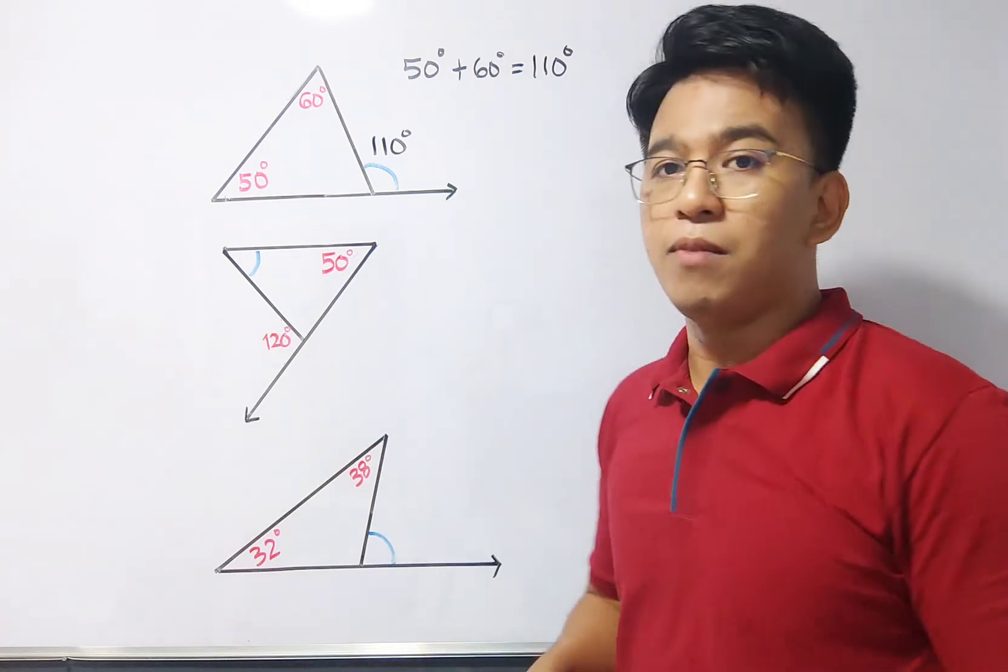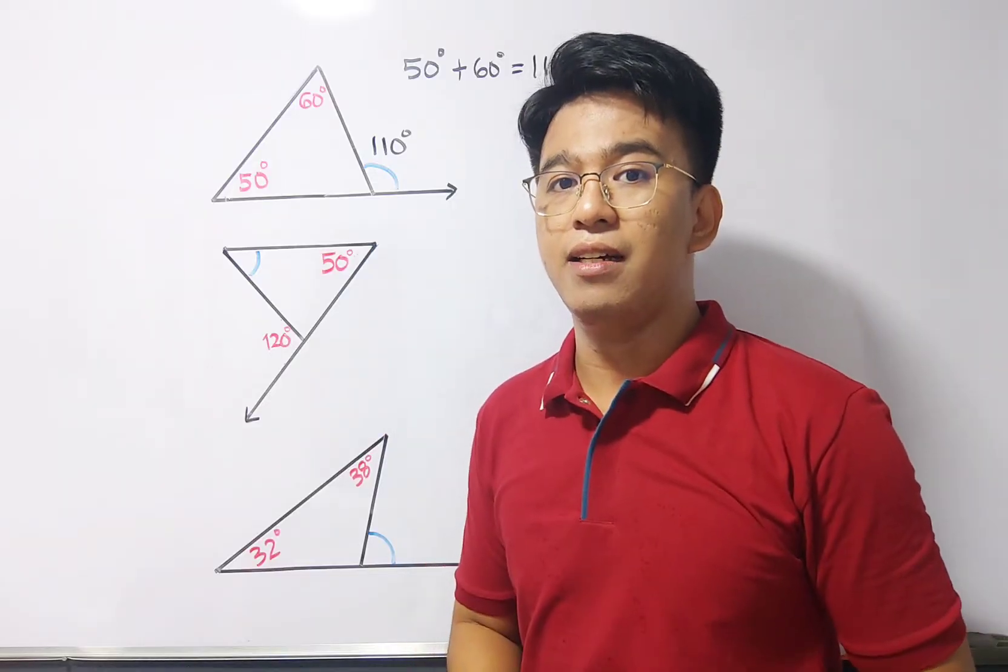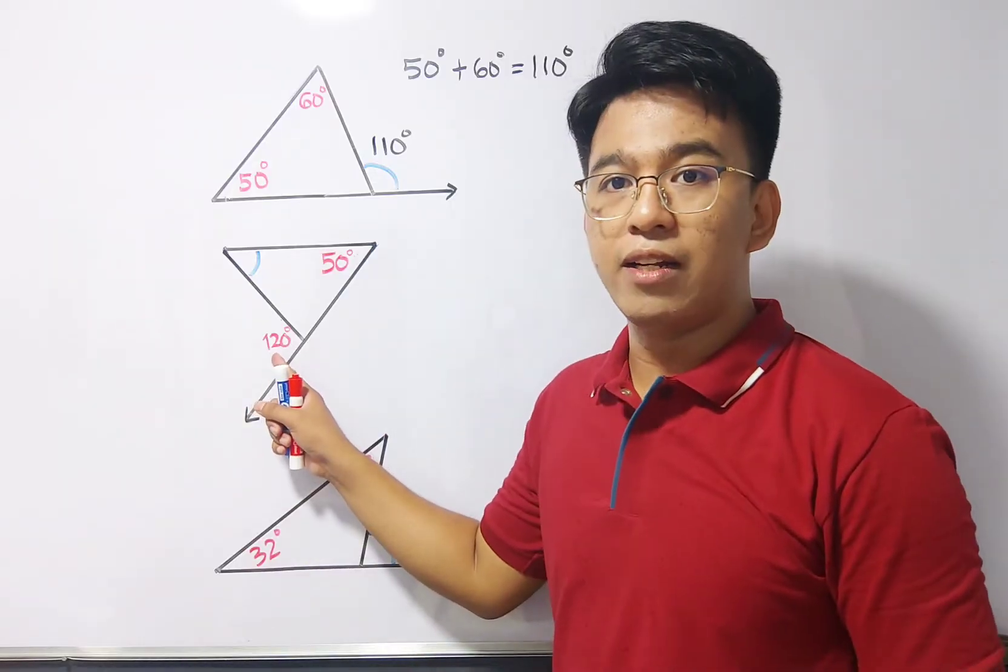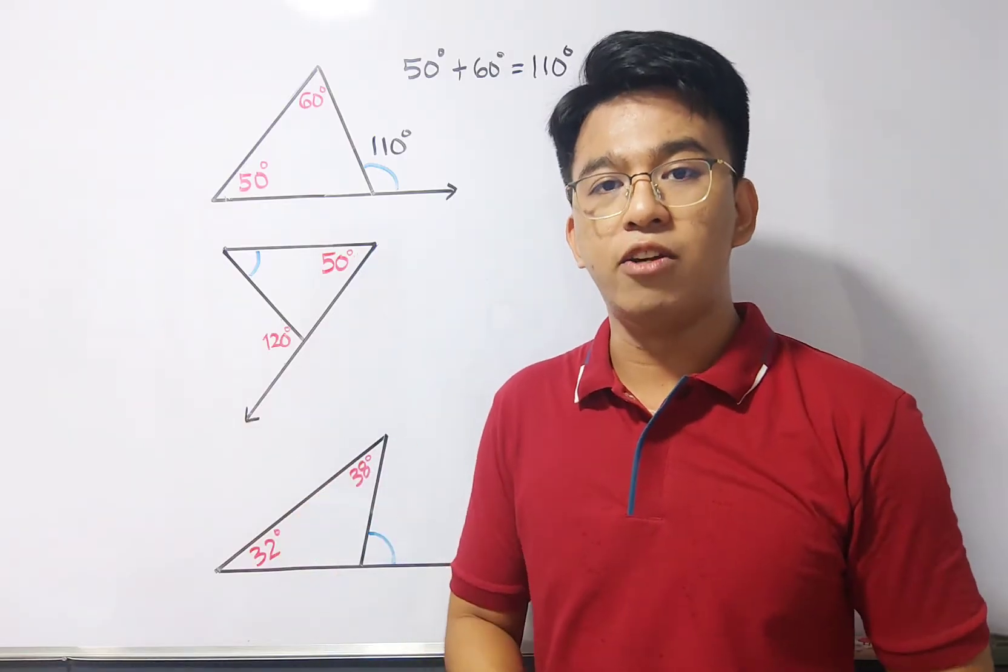So, let's move on with item number 2. And as you can see, in item number 2, we are given the exterior angle, which is 120 degrees. And what's missing here is one of the two interior angles that we have.